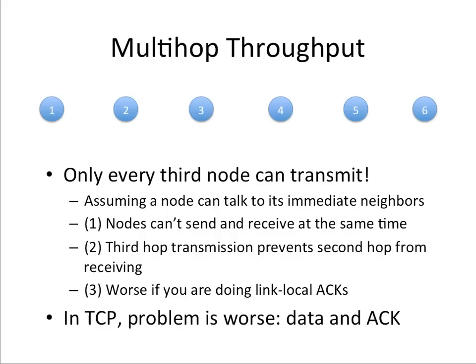In TCP the problem gets worse. To send packets from node 1 to node 6, there are also ACK packets coming back from 6 to 1, so the effective throughput is going to be even less than one third. The key idea is that in multi-hop forwarding, you can't use the full channel capacity because of contention among adjacent nodes.